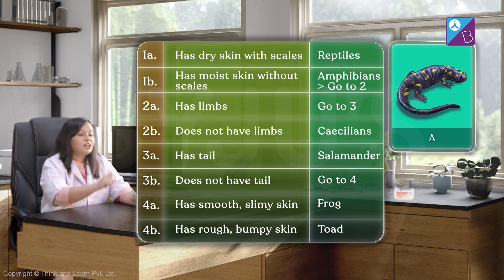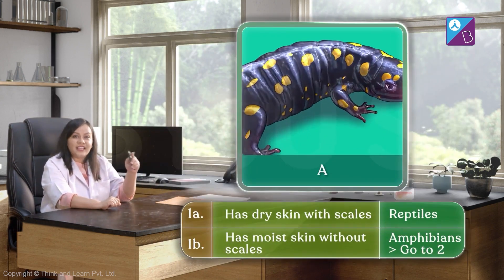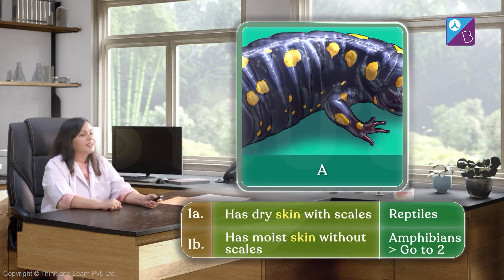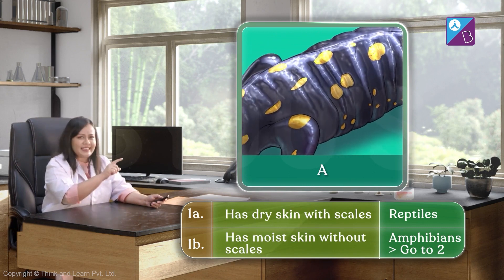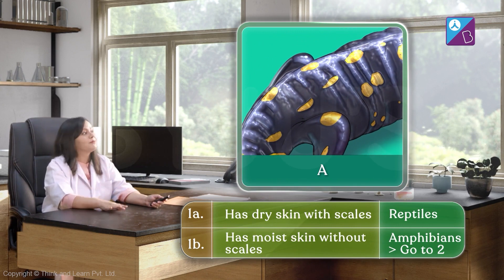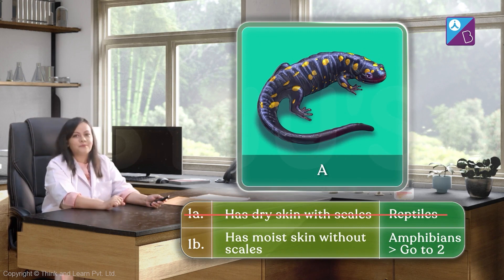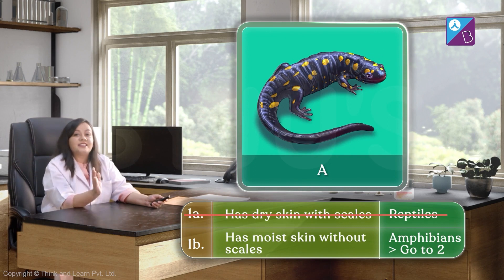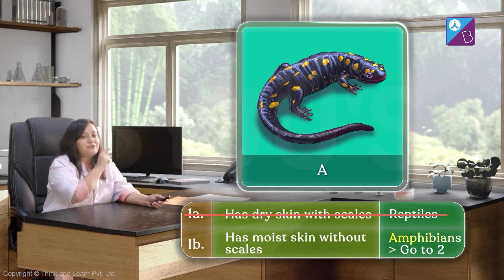Let's start with the first two statements. They talk about the skin. The skin looks kind of moist and slimy — it's definitely not dry. So we can definitely ignore the first statement. Our specimens can't be reptiles since they have moist skin with no scales. We can say that they are amphibians.